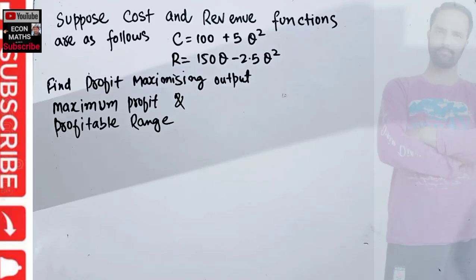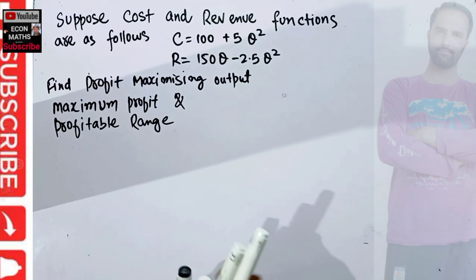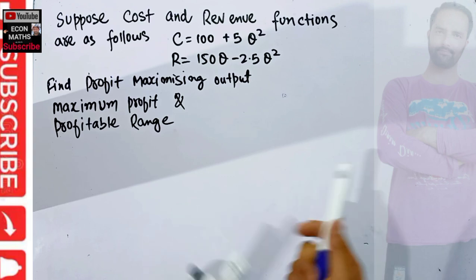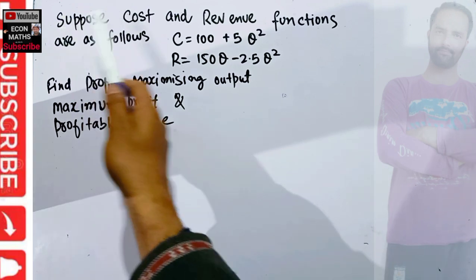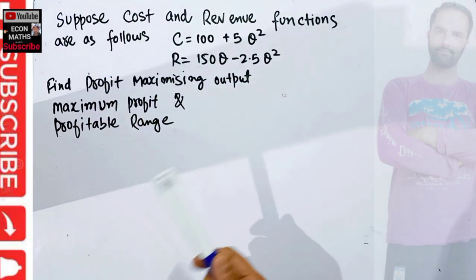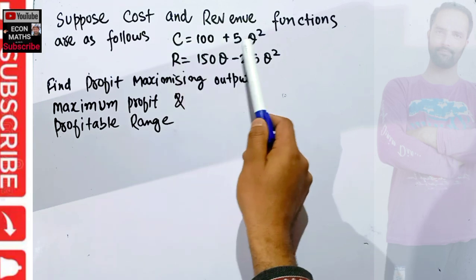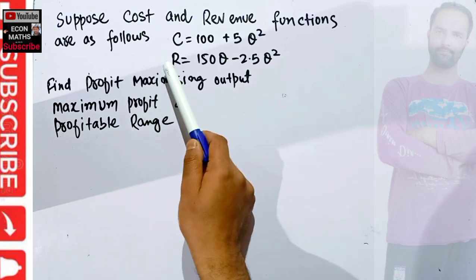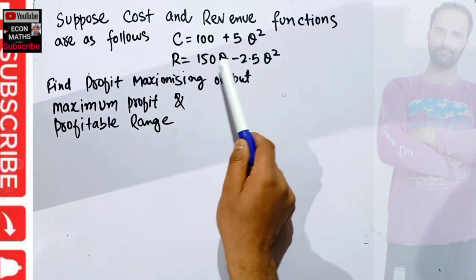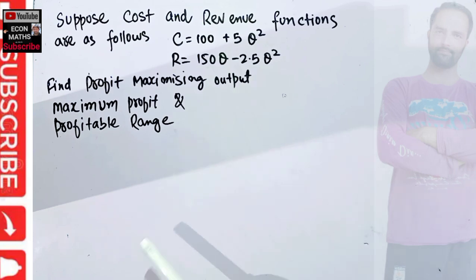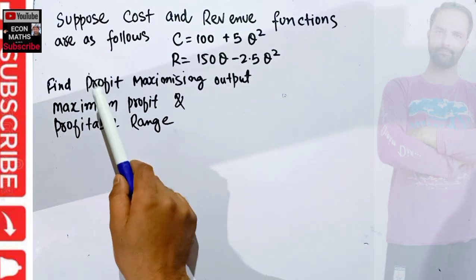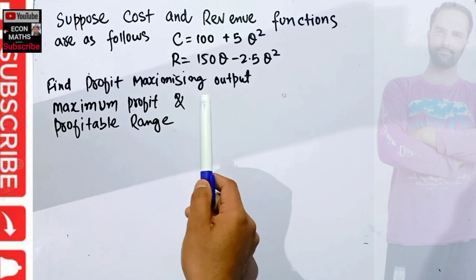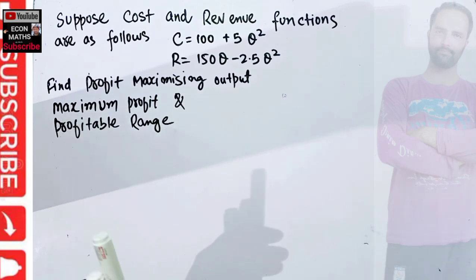In this video we will solve a numerical problem on how to find the profit maximizing level of output and profitable range. This question was asked by a brother Ram Sagar Shukla on YouTube. The cost and revenue functions are given as C = 100 + 5Q² and R = 150Q − 2.5Q². We need to find the profit maximizing output, maximum profit, and profitable range.